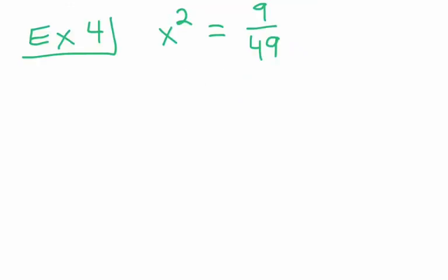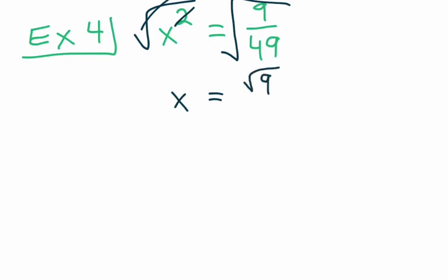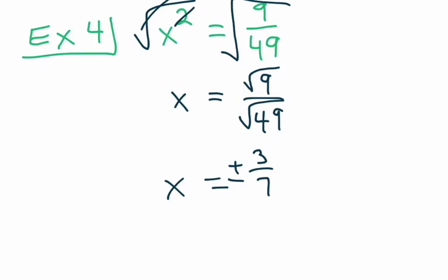Another one for you: x squared equals 9 over 49. Go ahead and pause the video to work through that. To solve this, we square root the left side — that causes the square root and the second power to cancel, leaving x. We square root the right side as well. The square root of 9 over 49 we can break into two separate square roots: square root of 9 over square root of 49. The square root of 9 is 3, and the square root of 49 is 7. That can be either positive or negative, so we have x equals plus or minus 3 over 7.